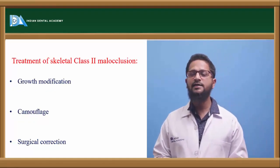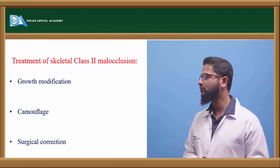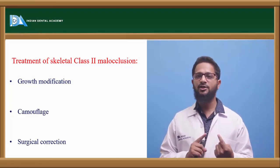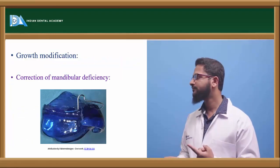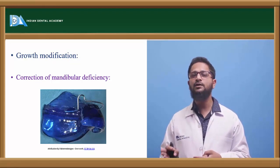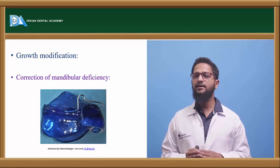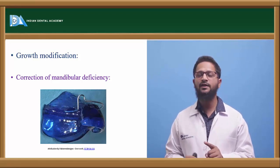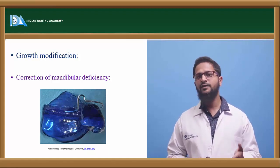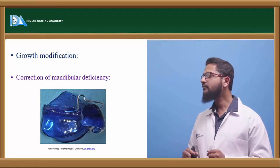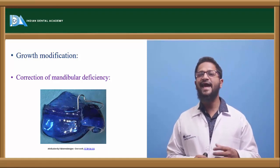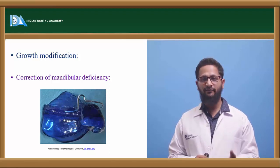Let us now know how to treat Class II Division I malocclusion. There are three modes of treatment: growth modification, camouflage, and surgical correction. Growth modification is usually done during the growth period, before cessation of growth. Before attempting growth modification, a lateral cephalogram has to be taken to evaluate which jaw is at fault. If there is mandibular deficiency, this can be corrected by giving appliances like activator, functional regulator FR2, or bionator — these myofunctional appliances will help to advance the mandible.